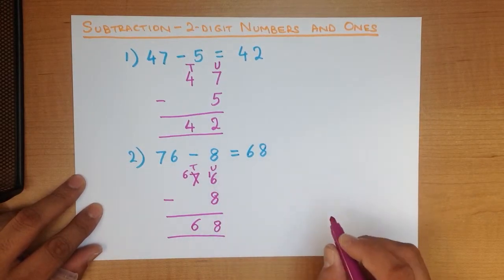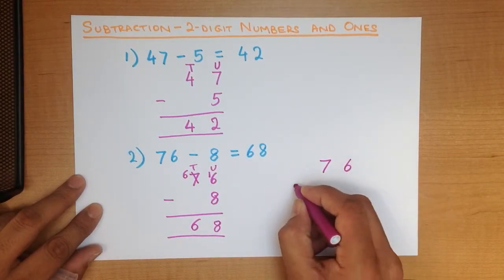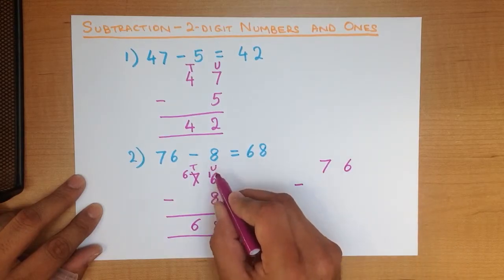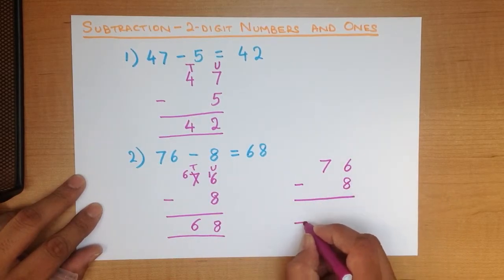First, we wrote the numbers down in columns. 76 minus, we are going to do minus 8. Nice equal sign at the bottom.